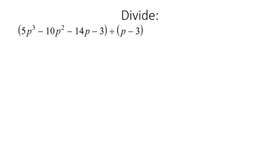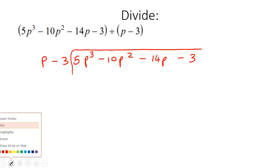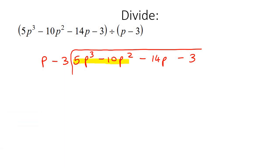Here's our next example. We're going to write it out as 5p³ take away 10p² take away 14p take away 3, and then we're going to divide that by p minus 3, so we just write it like that. By just doing a lot of examples, you'll get the rhythm or the process that we need to follow.